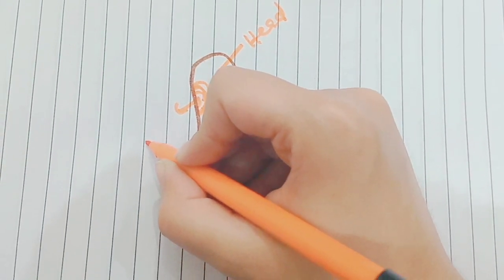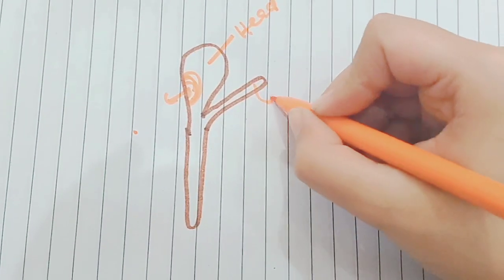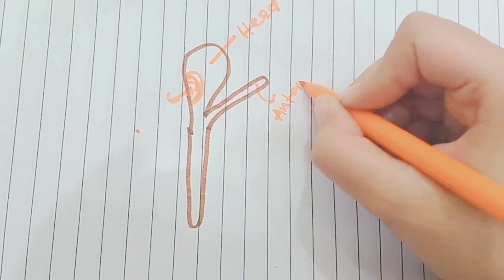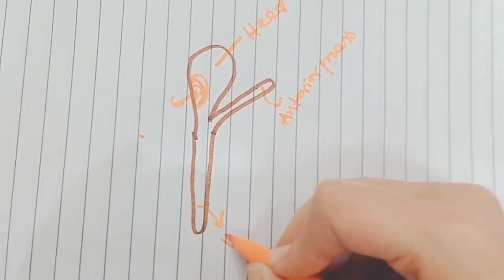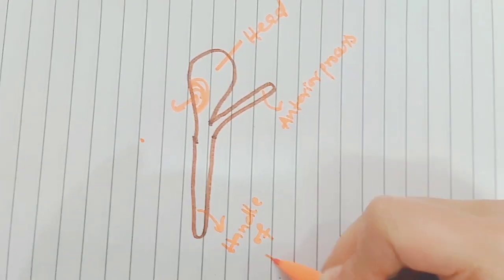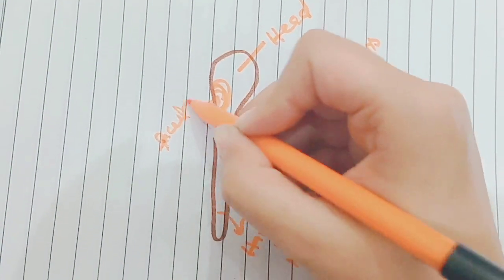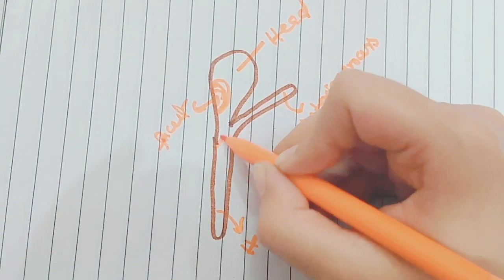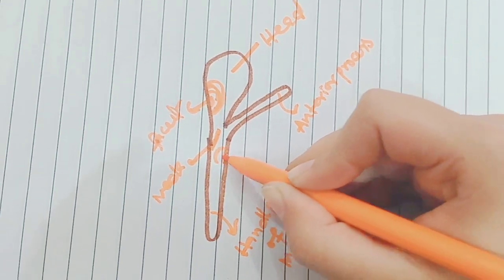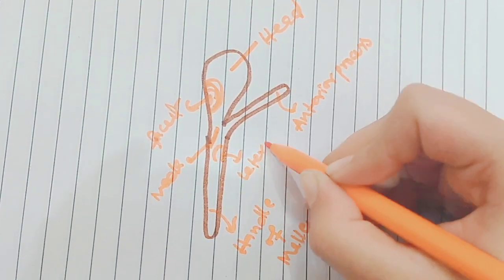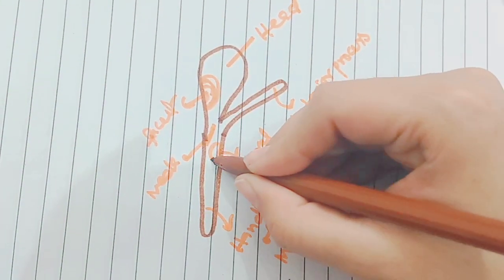This is a facet where Malleus is attached. This is the anterior process. This is the handle of the malleus, and this is the lateral process.